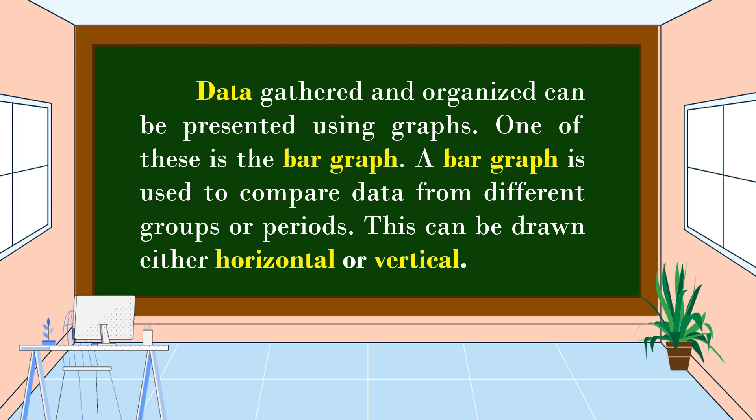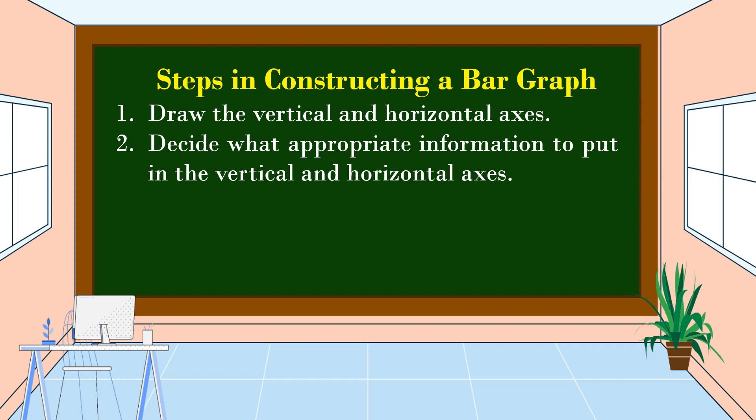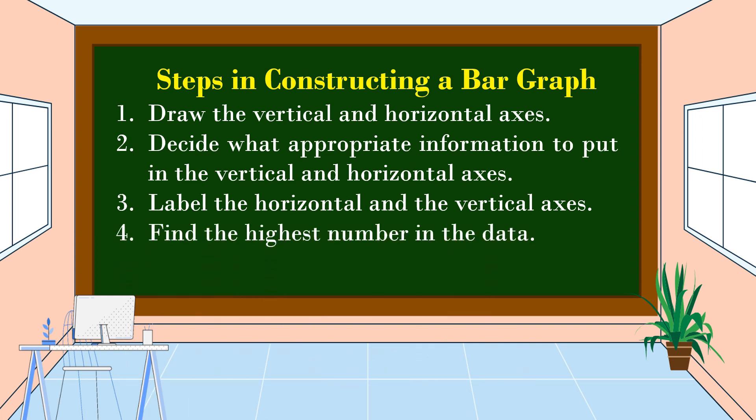These are the steps in constructing a bar graph. Number one: draw the vertical and horizontal axis. Number two: decide what appropriate information to put in the vertical and horizontal axis. Number three: label the horizontal and the vertical axis.